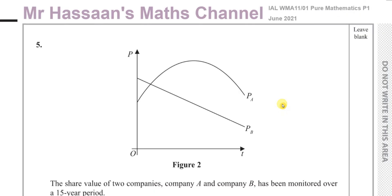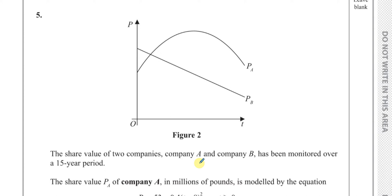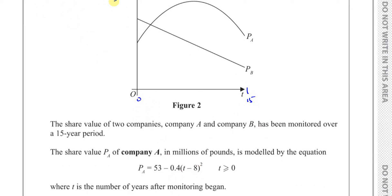This question gives us a diagram of two graphs on the same axis. It shows the share value of two companies: Company A, which is a parabola shape, and Company B, which is a straight line. They've been monitored over a 15-year period, from 0 to 15. The share value PA of Company A is in millions of pounds.